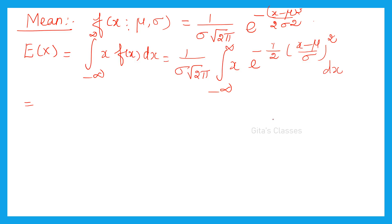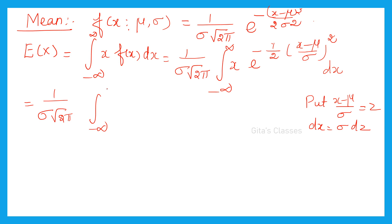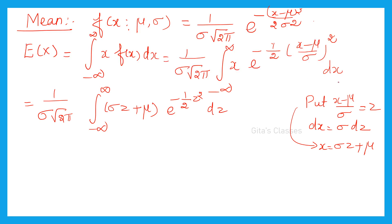Now I substitute x minus mu by sigma equals z for convenience. Then dx equals sigma dz, and when x is minus infinity z is minus infinity, when x is plus infinity z is plus infinity. So x equals sigma z plus mu. Substituting, sigma and sigma cancel, giving 1 by root of 2 pi times the integral from minus infinity to plus infinity of sigma z plus mu times e power minus z squared by 2 dz. I then split this into two separate integrals.